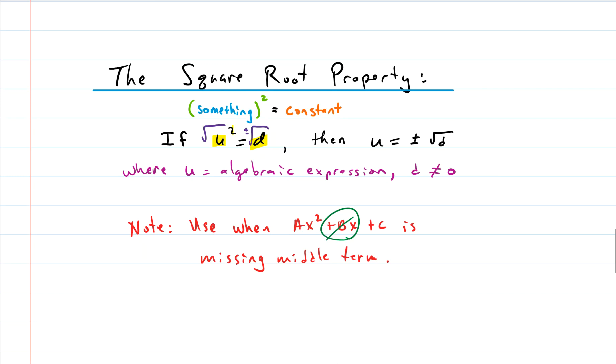I usually do it on the right, and then you get what they have here. The thing that was squared is now free and open, and you get plus or minus the square root of whatever your constant was.